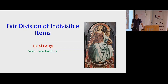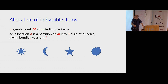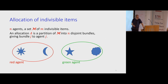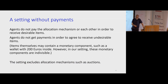I'll speak about the fair division of indivisible items. In the allocation of indivisible items, there are N agents, a set of M indivisible items, and an allocation is a partition of the set of items into N disjoint bundles, giving each agent one of the bundles. For example, the red agent got the sun and the moon, and the green agent got the star and the cloud. We deal here with settings without payments — agents do not pay the allocation mechanism or each other to receive desirable items.